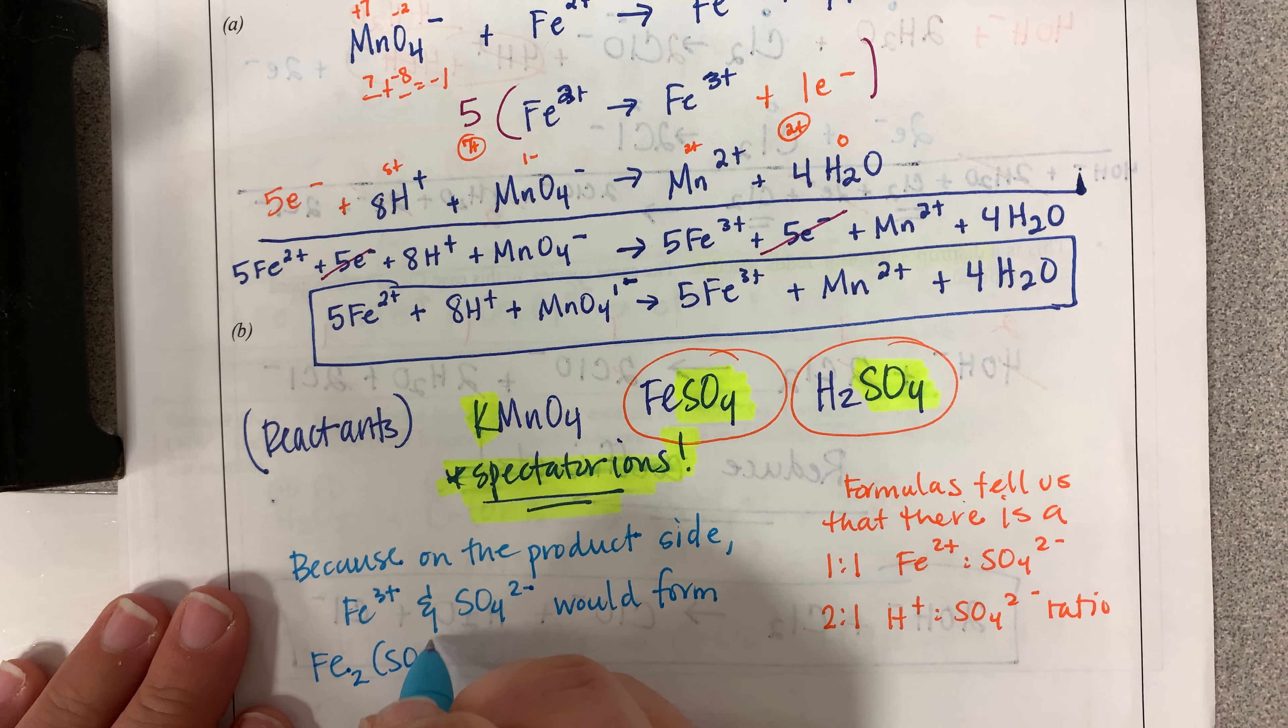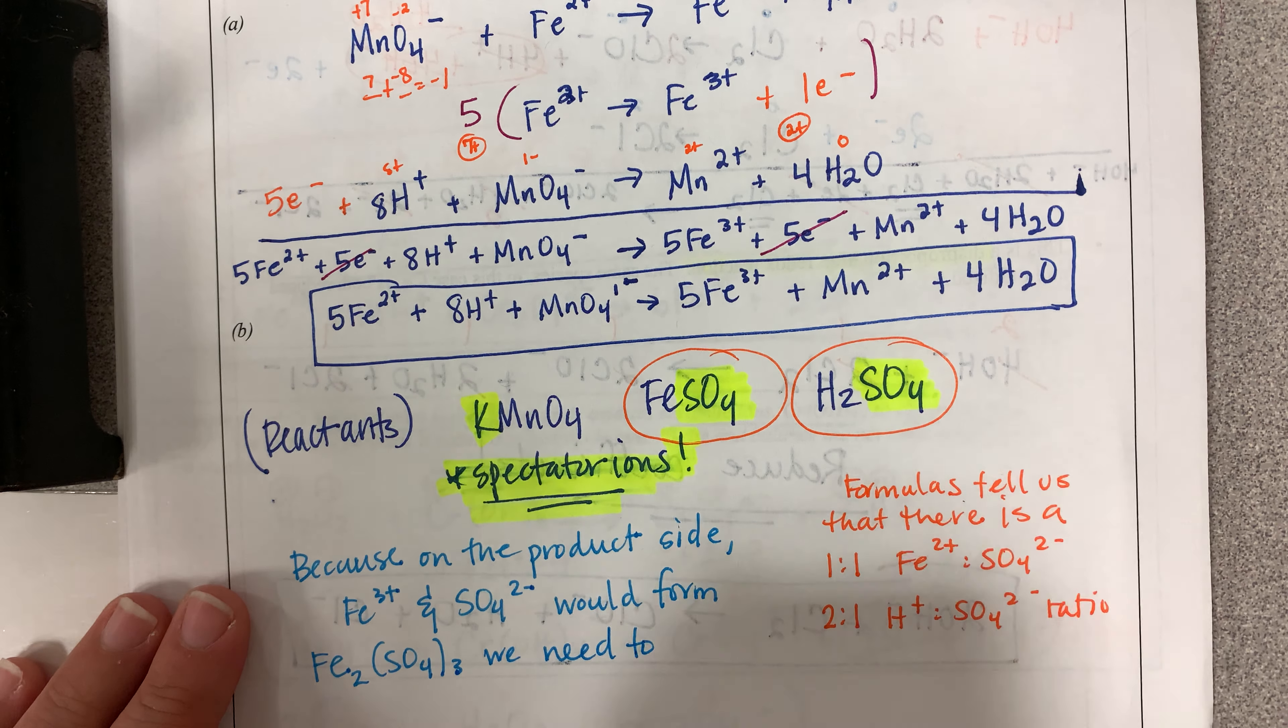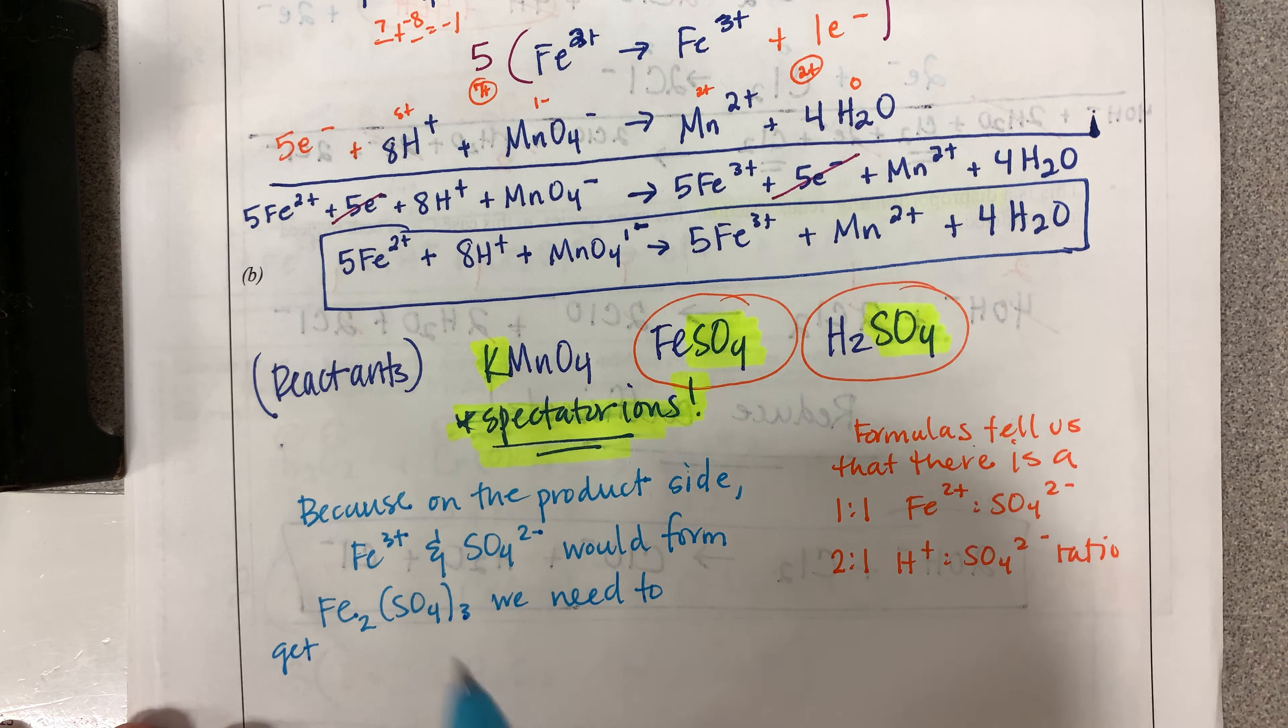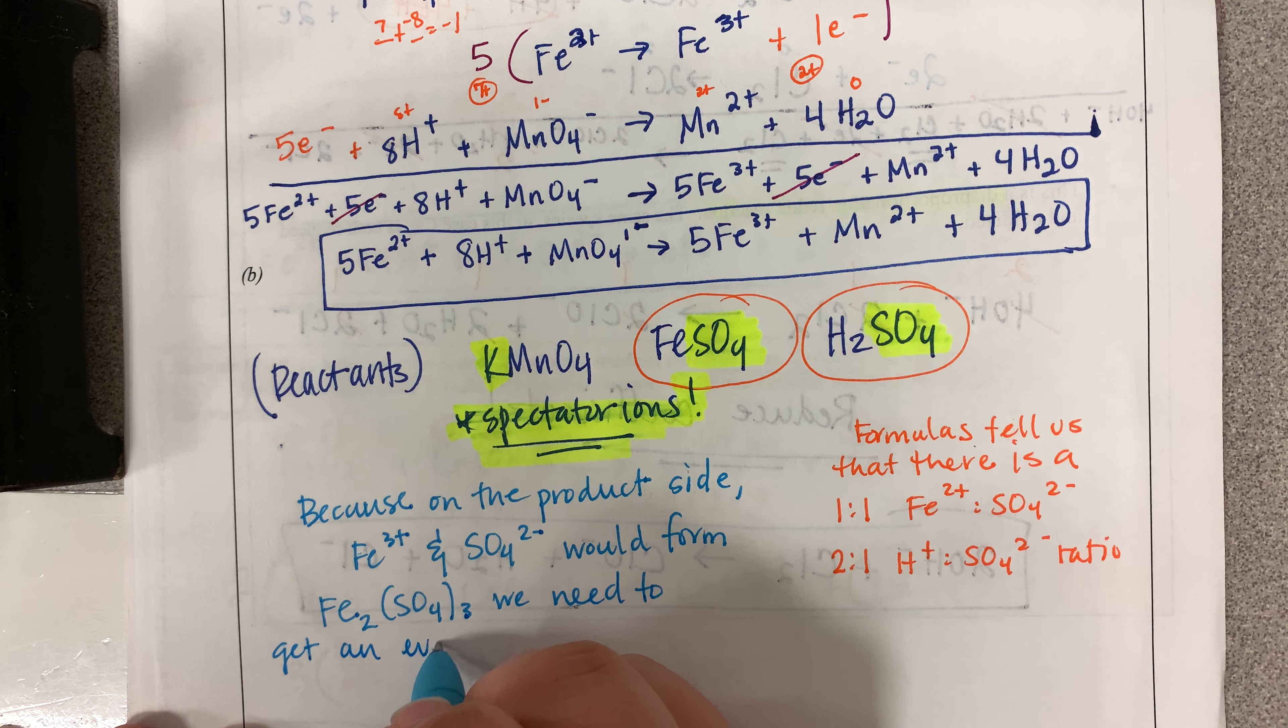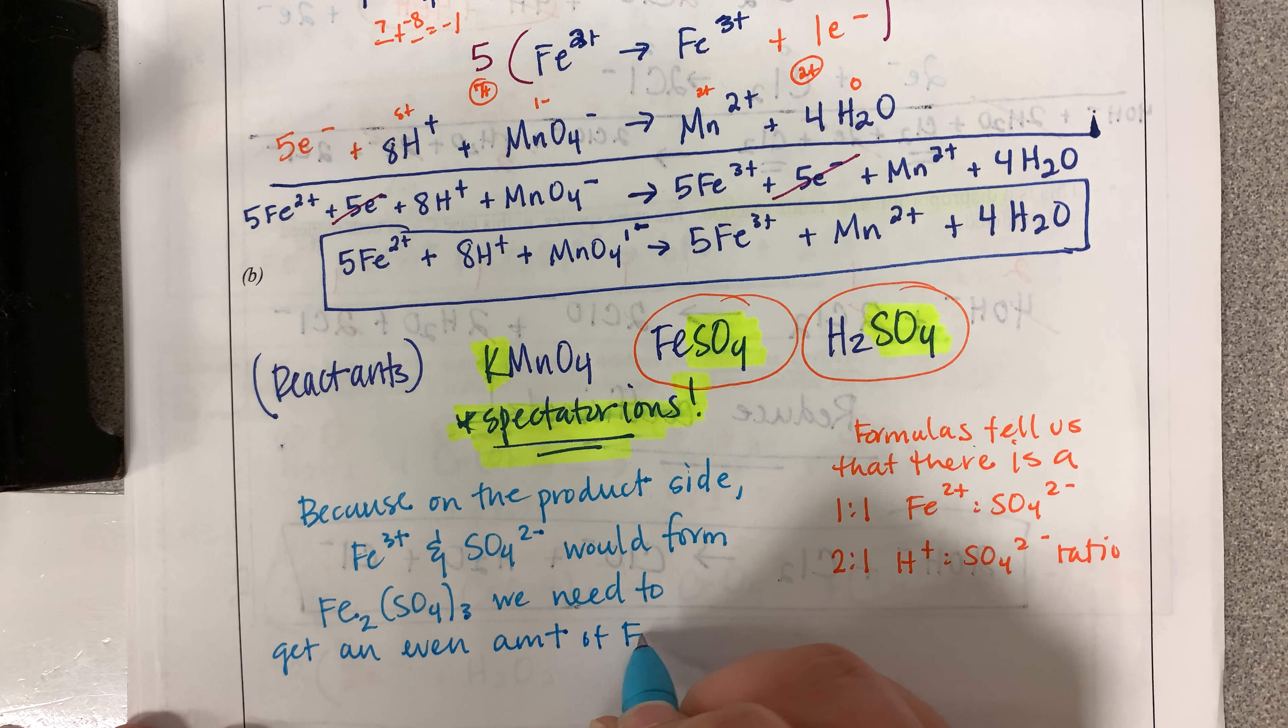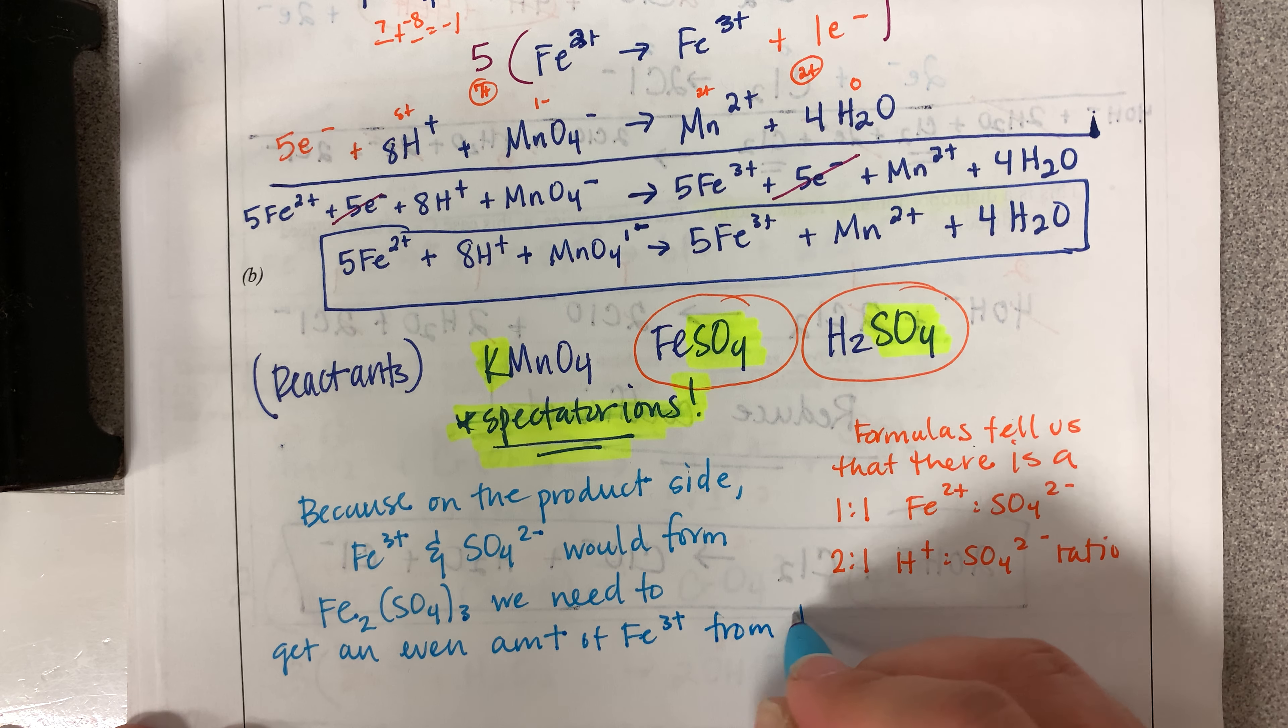we need to get an even amount of Fe3+ ions from the net ionic.